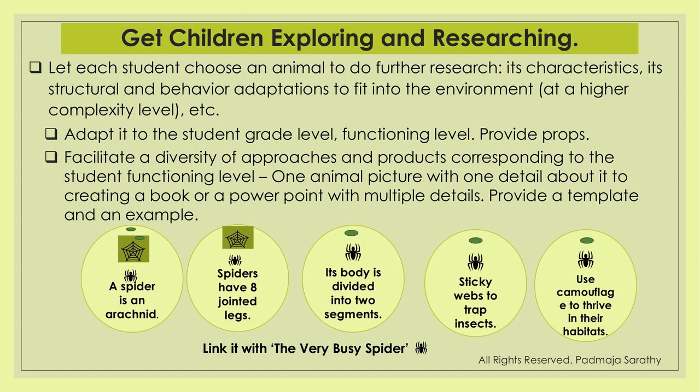For example, one talks about the spider being an arachnid — it has eight jointed legs, its body is divided into two segments unlike the insect with three segments, it has sticky webs, and it uses camouflage to thrive in its habitat. A lot of animals use camouflage in order to survive. Especially at the first and second grade level, you can talk about how many animals use camouflage to survive from their predators.